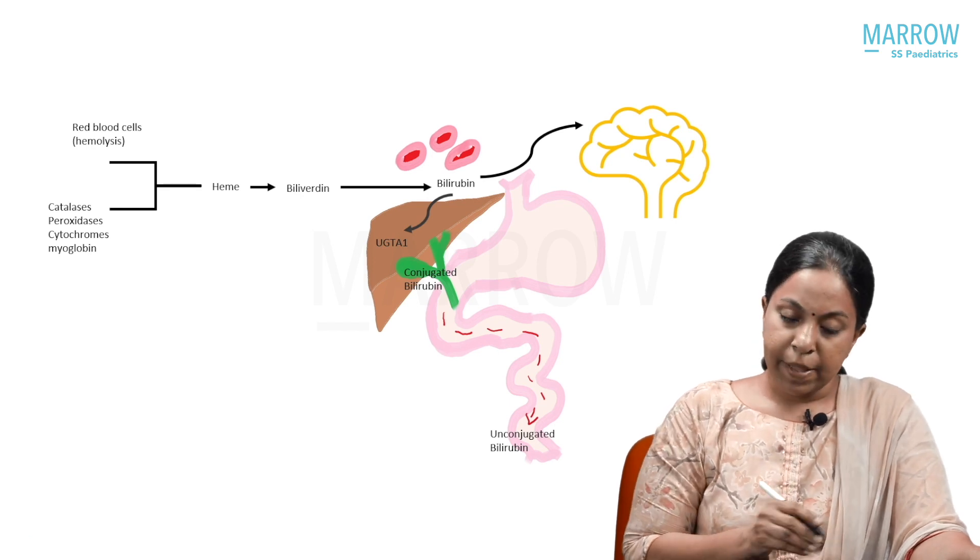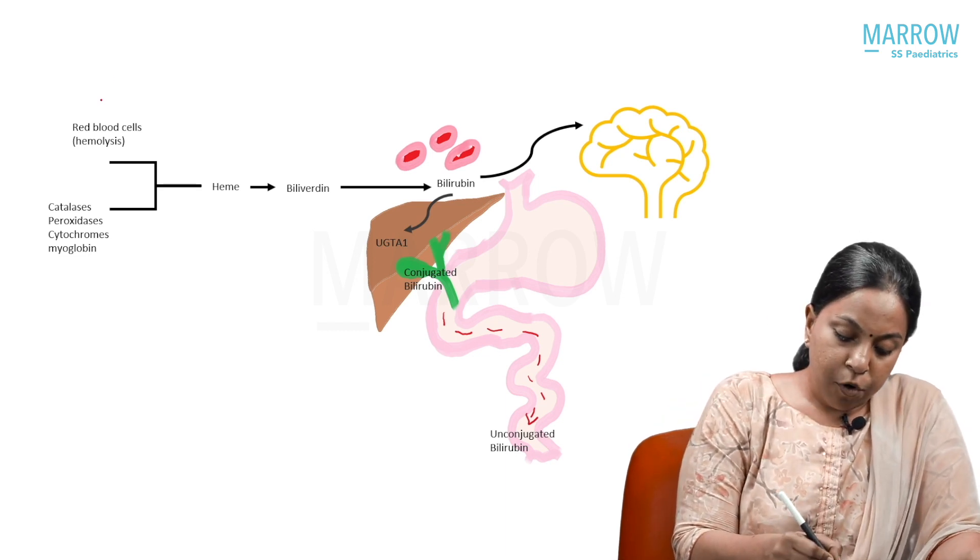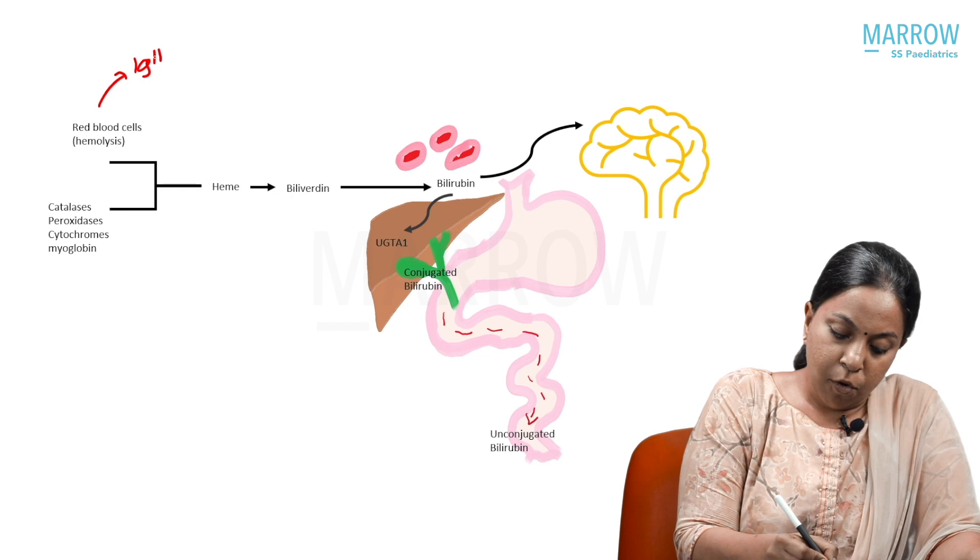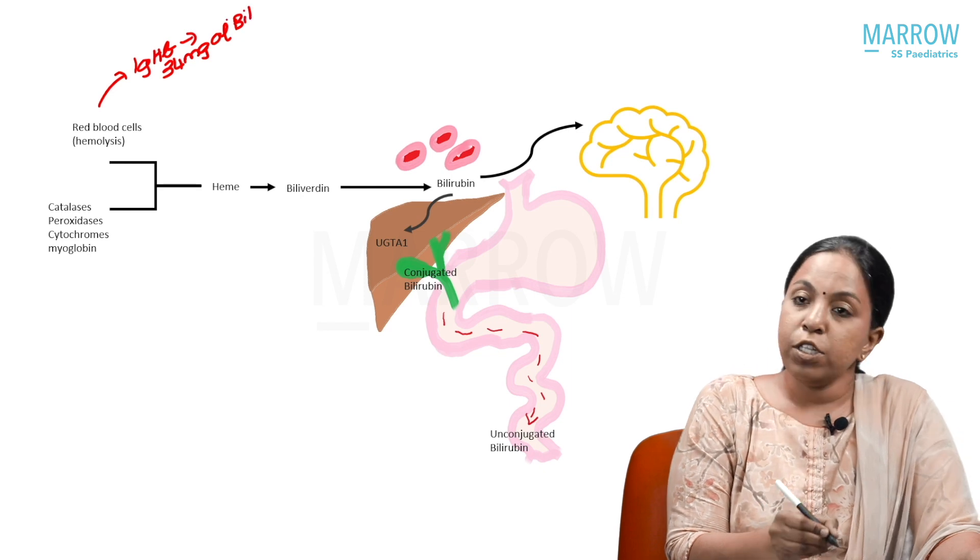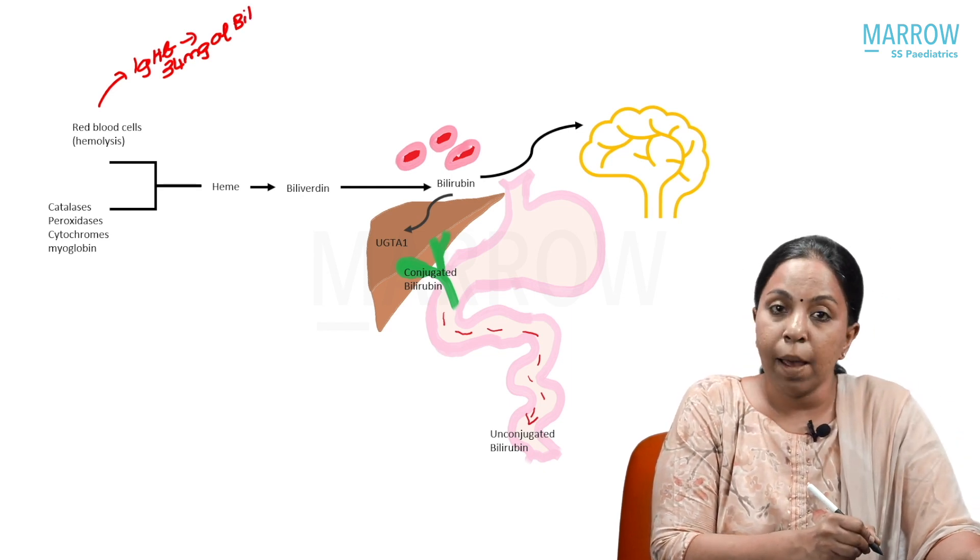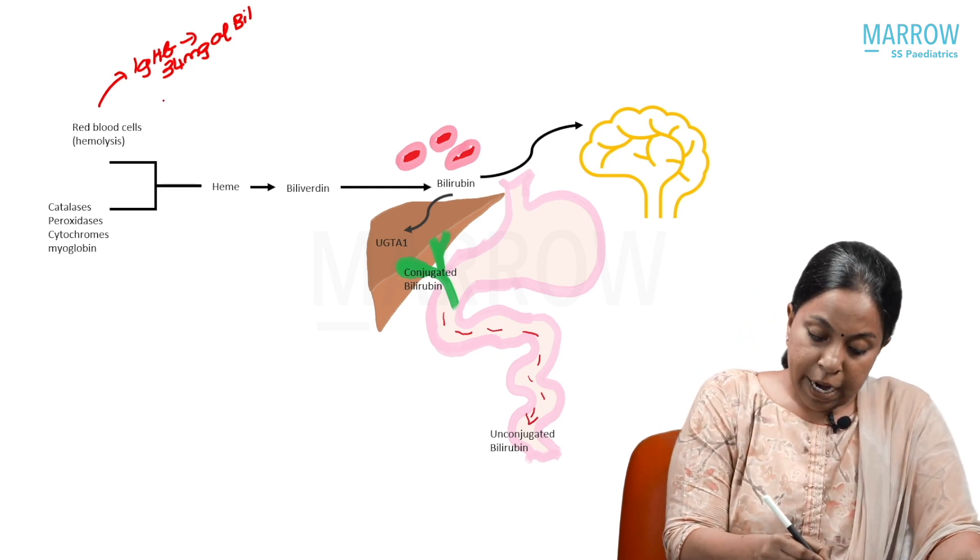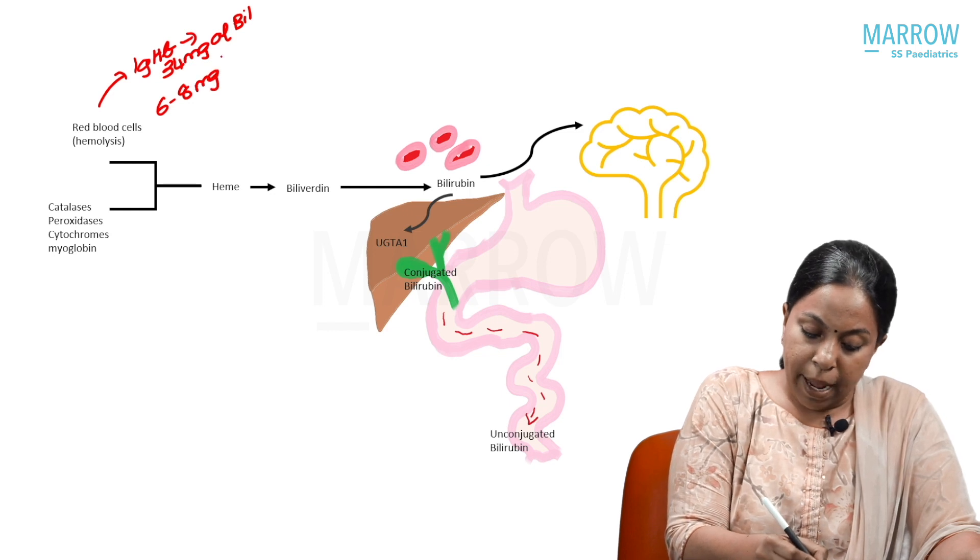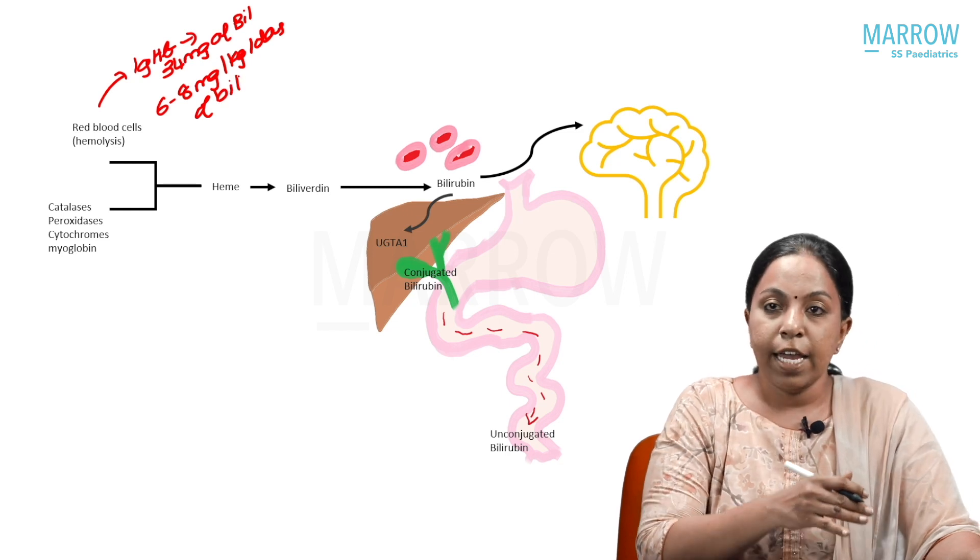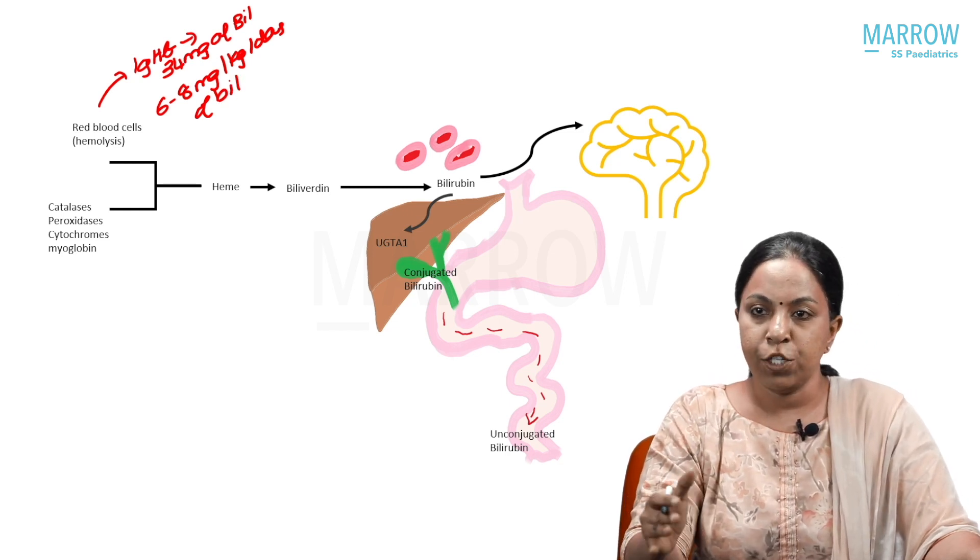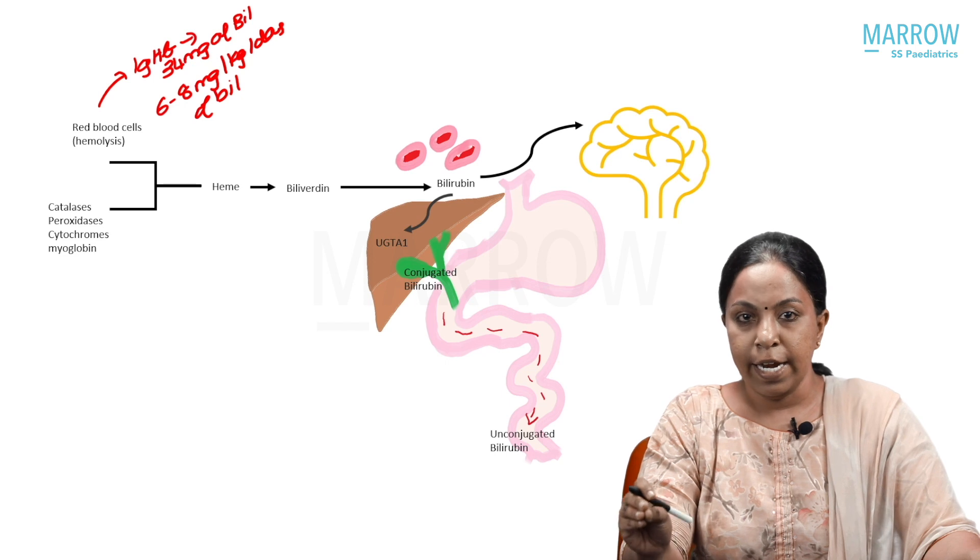Let's add something to this basic structure that we all know. The RBCs hemolyze and produce bilirubin. One gram of hemoglobin usually produces 34 milligrams of bilirubin. This is an MCQ that has been asked earlier. A newborn produces 6 to 8 milligrams per kg per day of bilirubin in a day. This is against the 3 to 4 that adults produce, only half per kg of body weight.